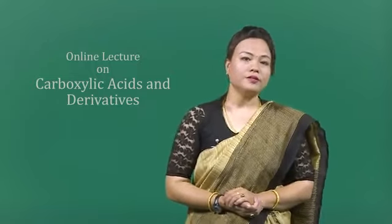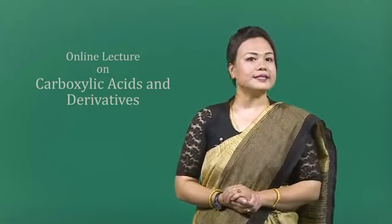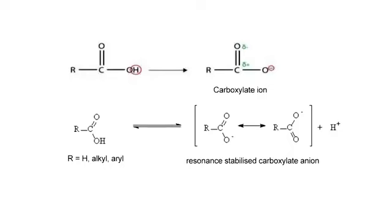In the explanation for the acidity of carboxylic acids, we'll be discussing three factors. The first factor is the inductive effect. The minus I effect, that is the minus inductive effect of the carbonyl group, facilitates the release of the proton in the carboxylic acids. Also, the carboxyl group is a resonance hybrid, and because of the positive charge on the oxygen atom of the OH group, proton release is facilitated. Inductive effect is a movement of electron density through sigma bonds based on electronegativity.